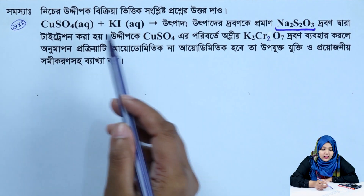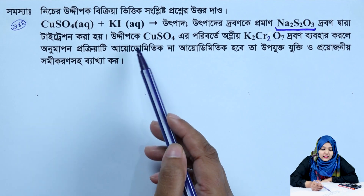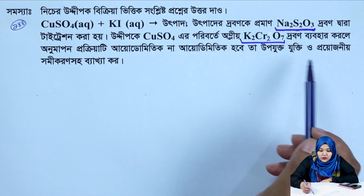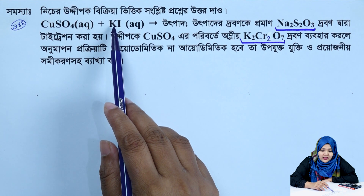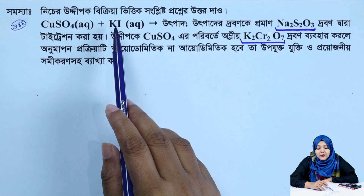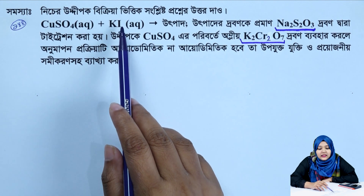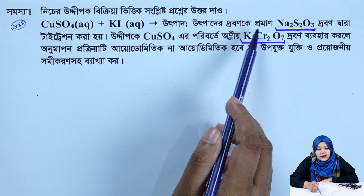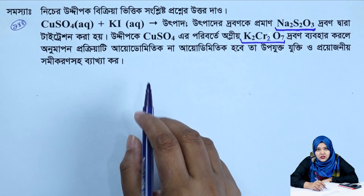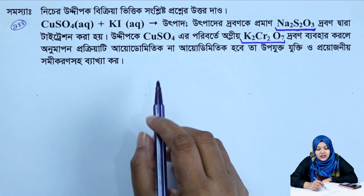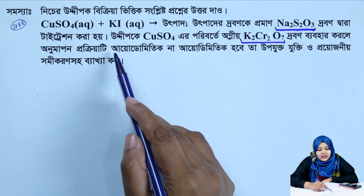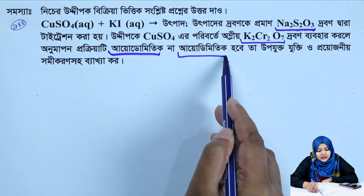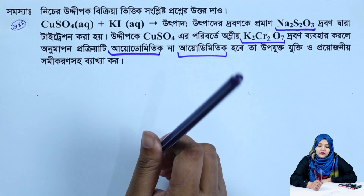We have to take the potassium dichromate first, then potassium iodide. We will take the potassium dichromate to the next step. This is the potassium iodometric change to your degree.